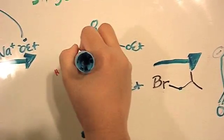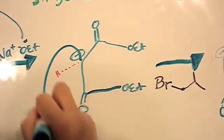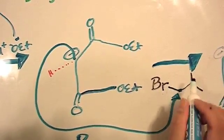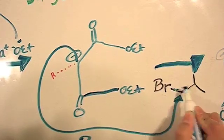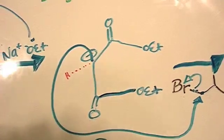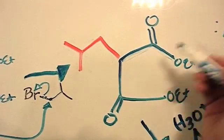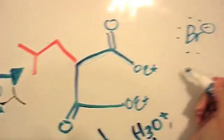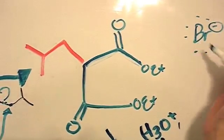So here, the alpha carbon will then attack, being the nucleophile that it is, the electrophile on the alkyl halide. Then the electrons here on this bond will leave and go to the bromine. Now you no longer have your enolate, and you have this added alkyl. And here's the bromine in this solution with all of its electrons.